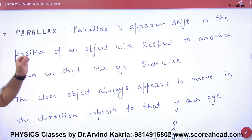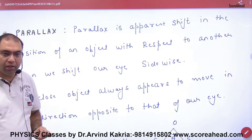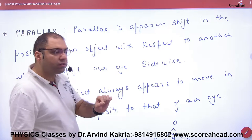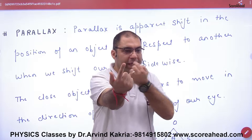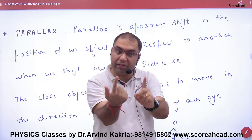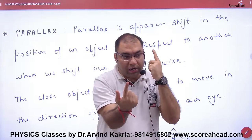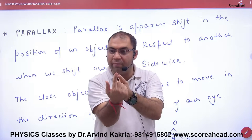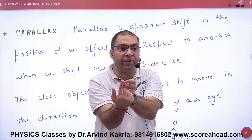Parallax is the apparent shift in the position of an object with respect to another when we shift our eye sideways. In a simple way — this is a finger. My left eye sees it from here and my right eye sees it from here. The angle between these two lines of sight is called the parallax angle.